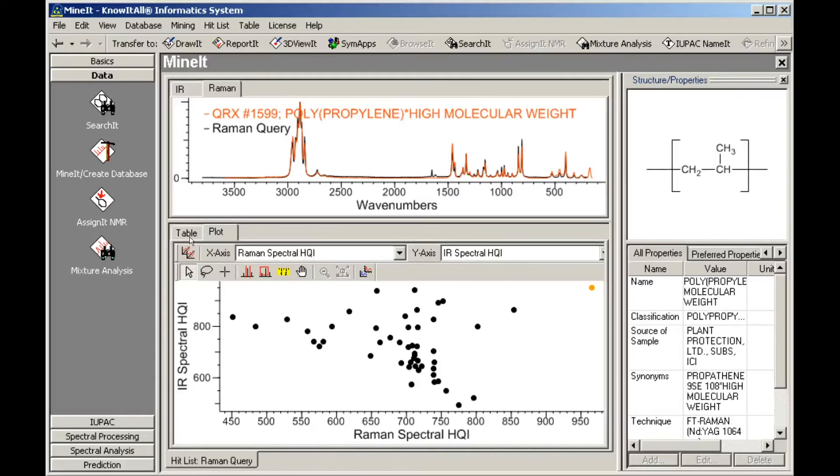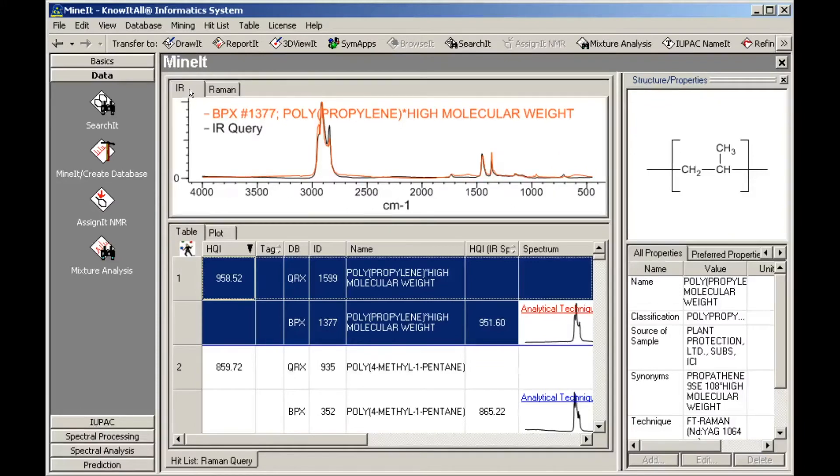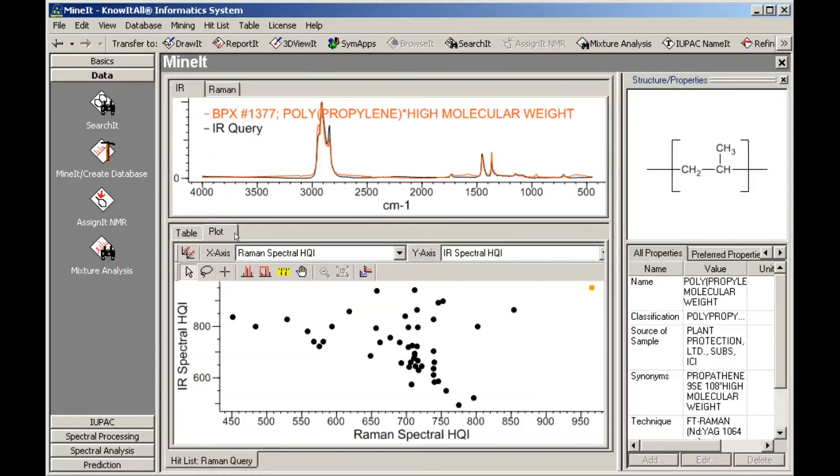Click the Database Pane's Table tab to view the entries corresponding to the selected point on the HQI plot. Click the IR tab in the Spectral pane to view the IR spectra corresponding to the first hit. We can select any point in the plot and view the corresponding database entries.